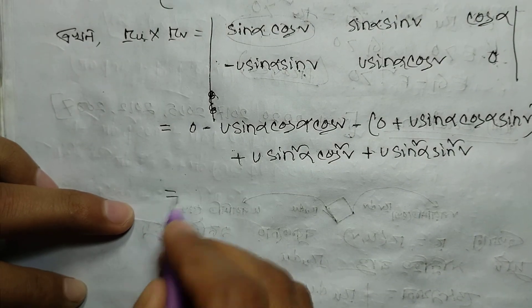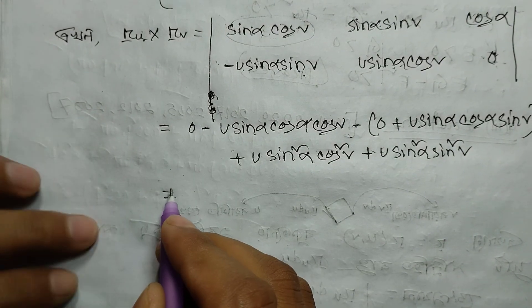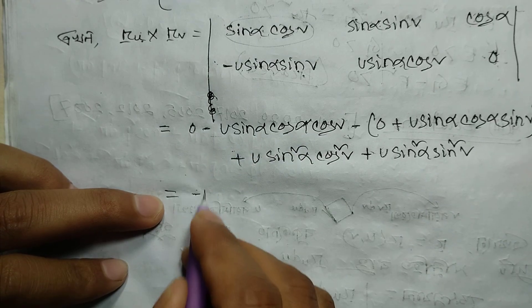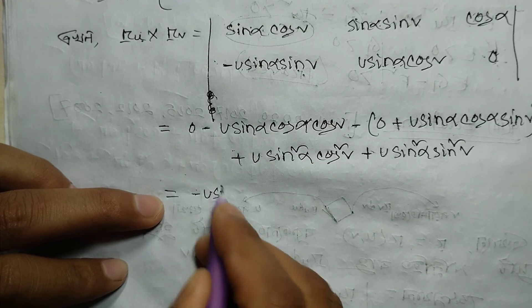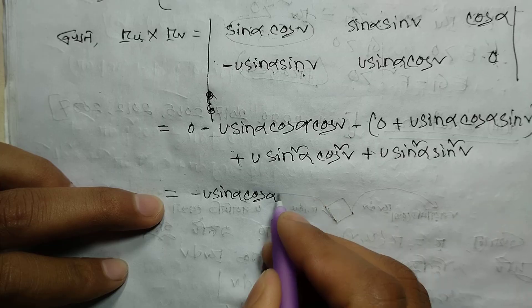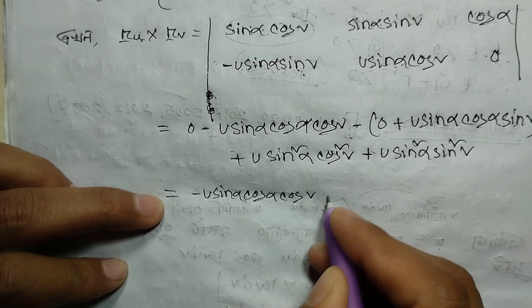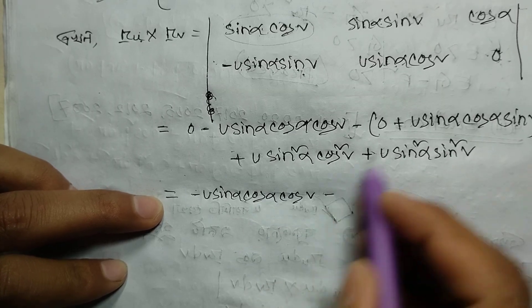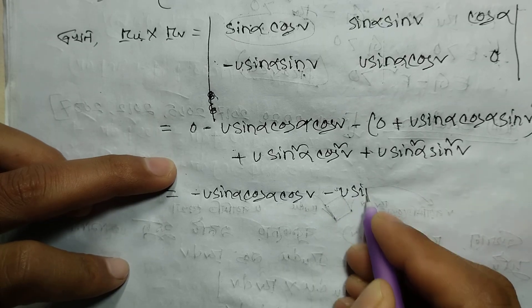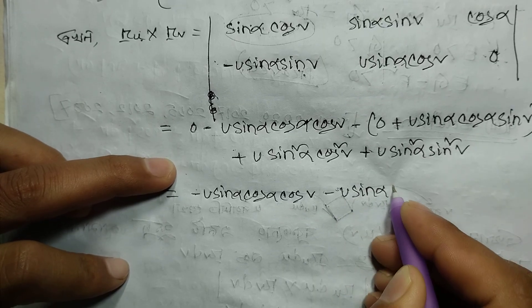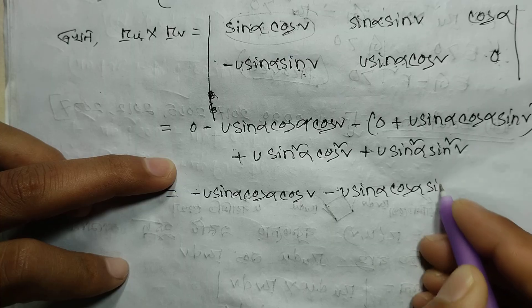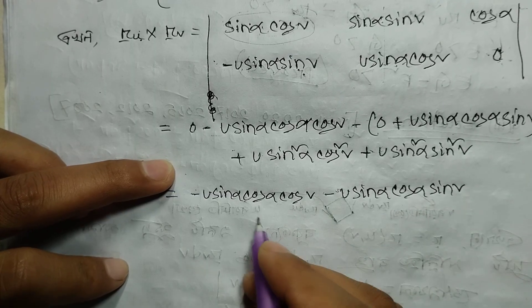Now computing the cross product further: the result gives n equal to minus u sinα cosα cosv, then minus u sinα cosα cosα sinv.